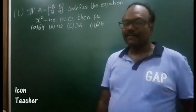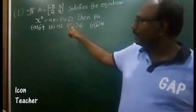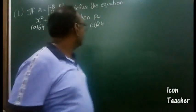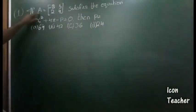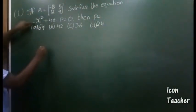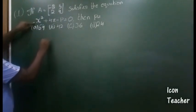First of all, you should know what is the meaning of A satisfying the equation. So let us observe this: if you substitute matrix A in this equation, we get this as A² plus...